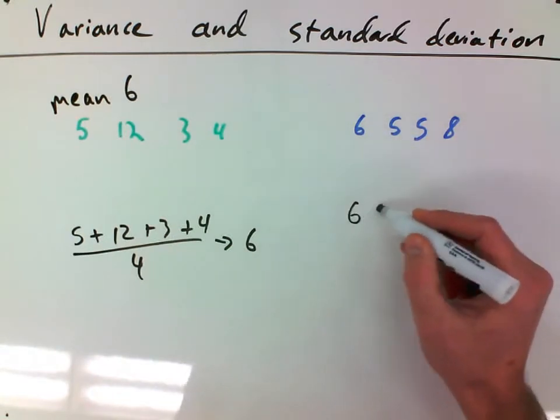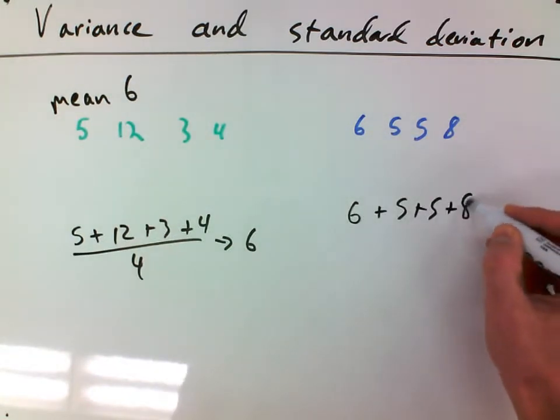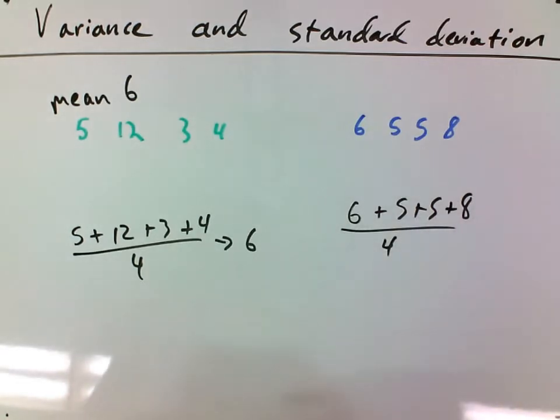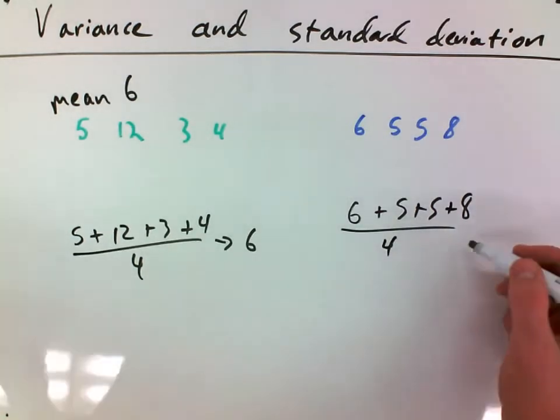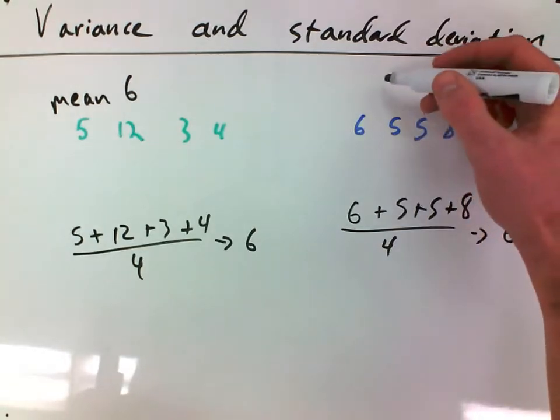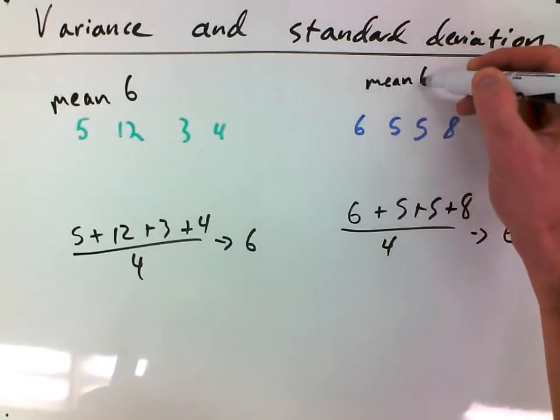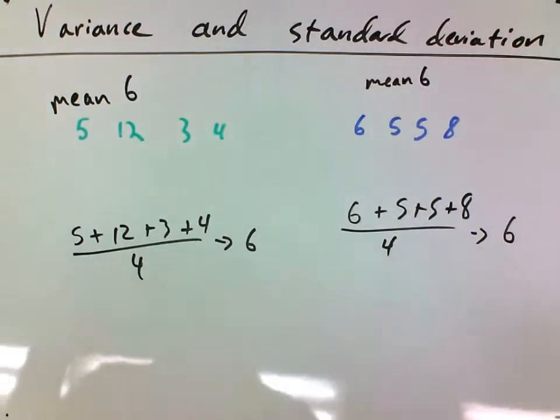And if I do the same thing for this pitcher, he gave up 6 runs, 5 runs, 5 runs, and 8 runs. Divide that by 4, I'll figure out the same thing that he gave up on average 6 runs a game.